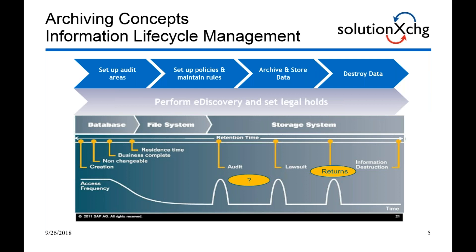This slide is focusing on the archiving concept relating to information lifecycle management. What I want to focus on here is access frequency. When data gets created and is going through its various stages of changing and status being updated, the access is quite frequent and you want to keep that data within the database. As time goes by and a record becomes business complete, the access frequency starts to drop. The time from when a document is created to the time when it is eligible to be moved to the archive system is called residency time — the time frame that needs to be determined for all eligible data you're looking to archive.